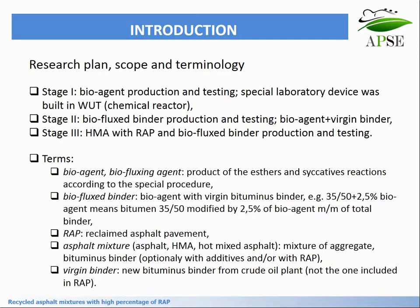The research plan was divided into three stages. Stage one was bio-agent production and testing. Stage two was bio-flux binder production and testing. Stage three was on asphalt mixture with RAP and bio-flux binder. Specific terms used in the project: bio-agent and bio-fluxing agent as a product of acid and siccative reactions; bio-flux binder as a bio-agent with virgin bituminous binder; RAP as reclaimed asphalt pavement; asphalt mixture or HMA as hot-mix asphalt; and virgin binder, stated for new bituminous binder from a crude oil plant.